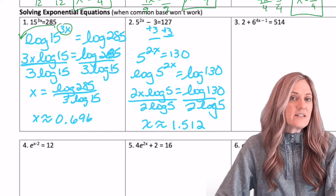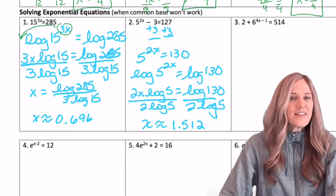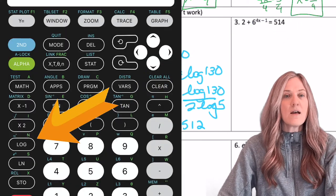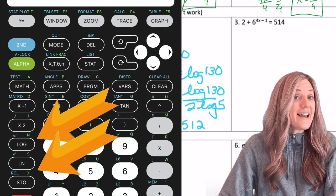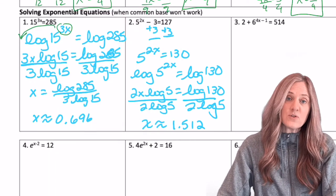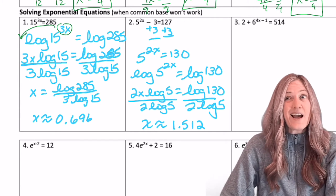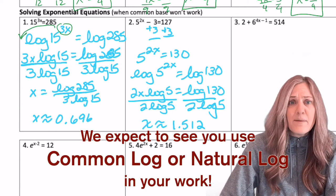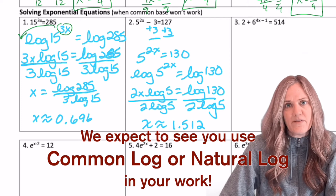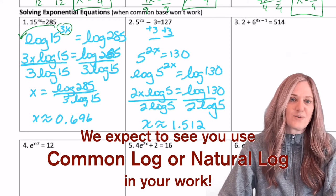So x is approximately 1.512. Something that we should consider. Notice that I've been using common log, log base 10. Well, that's because our calculator is programmed for common log, but it's also programmed for natural log, log base e. So when solving exponentials, I can use either common log or natural log. Frankly, I could use log base 7, but my calculator doesn't have a log base 7. So I'm going to choose common or natural. Let's do the next one using natural log.